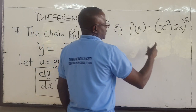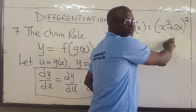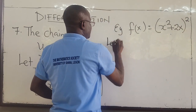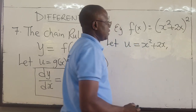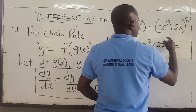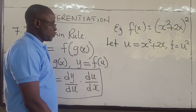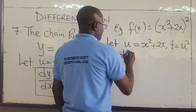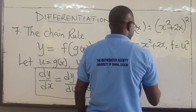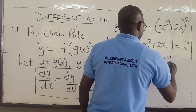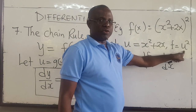Let's use the chain rule. You have the function x squared plus 2x, and this is squared. If the squaring wasn't there, it would be easy — you'd just apply the power rule. But because of that, you use the chain rule. Chain rule says: let u be equal to the inner function, which is x squared plus 2x. This implies that f now equals u raised to the power 2.